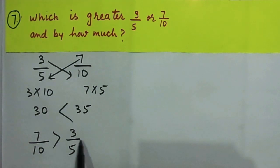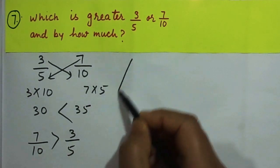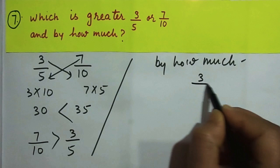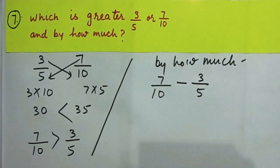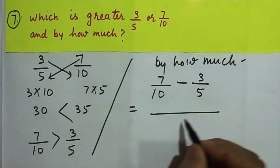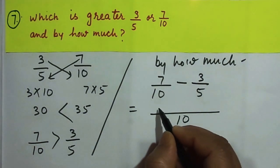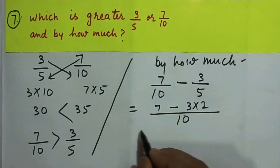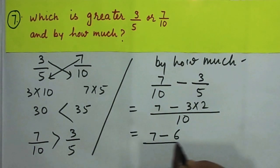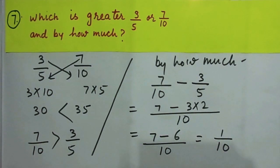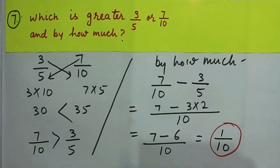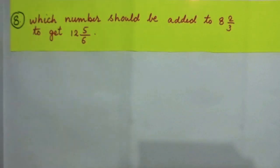Once we know 7/10 is greater, we can find by how much by subtracting the smaller from the greater. The LCM of 10 and 5 is 10, giving 7/10 minus 3/5 = 7/10 minus 6/10 = 1/10. So 7/10 is greater than 3/5 by 1/10.